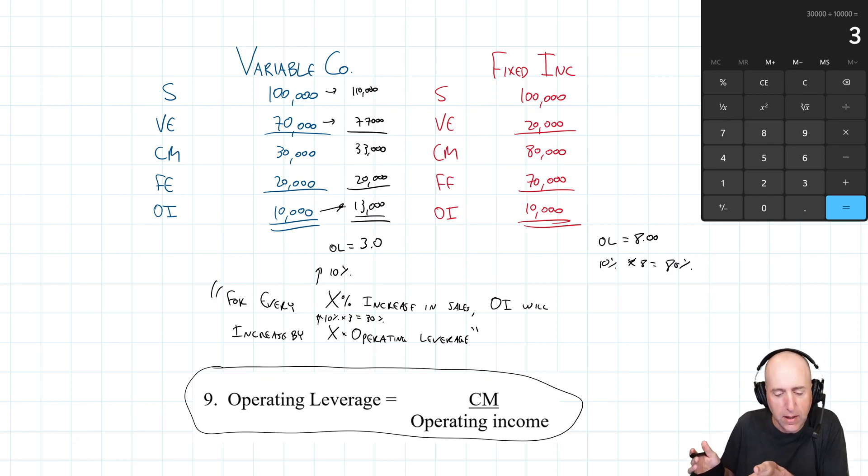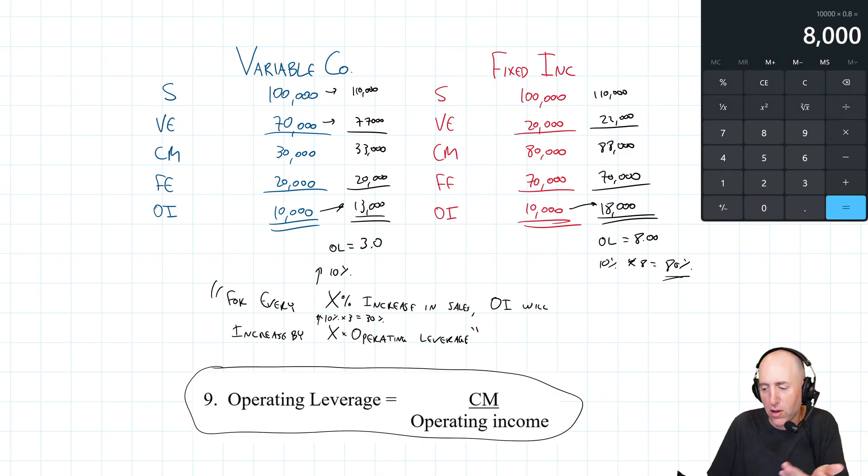So we didn't need to recreate the income statement to go, variable company, if its sales go up by 10%, its operating profits are going up by 30%. Let's look at fixed company, which we said operating profits are going to go up by 80%. The sales go up by 10%. So again, to $110,000. Variable expenses go up by 10%. So to $22,000. $110,000 minus $22,000 is $88,000. Fixed expenses stay at 70% because they're fixed. And our operating income goes up to, my handwriting's a little messy, $18,000. So yeah, it went up from 10 to 18. That is an 80% increase, right? And the math is 10,000 times 0.8, $8,000. It went up by $8,000. That's an 80% increase.